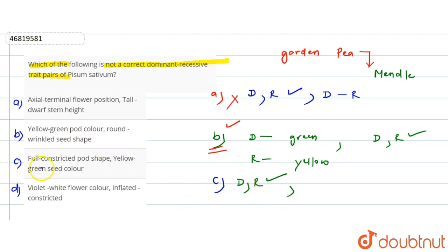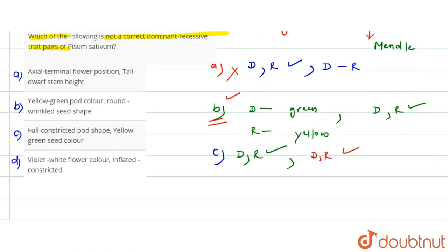In the next example, we have yellow and green seed color. Here we also have the dominant-recessive pair given. In the last option, we have violet and white flower color, which is again in the order of dominant-recessive.